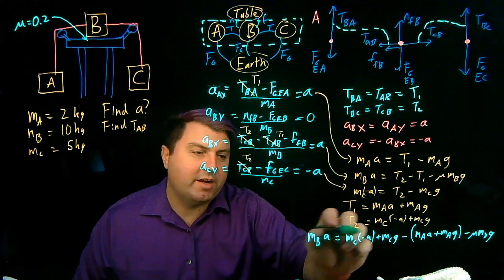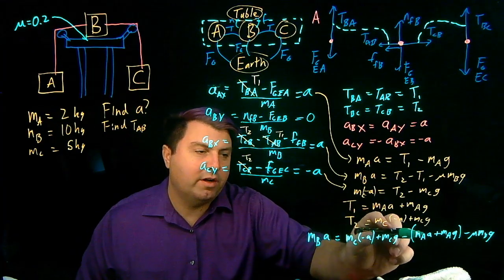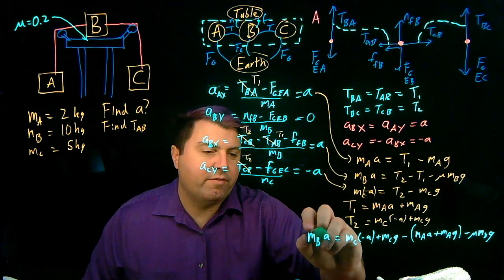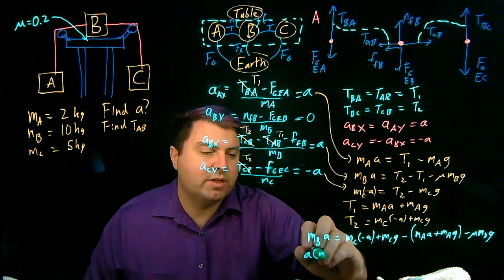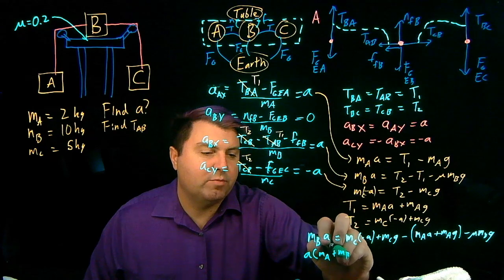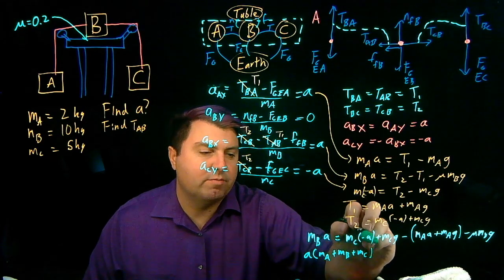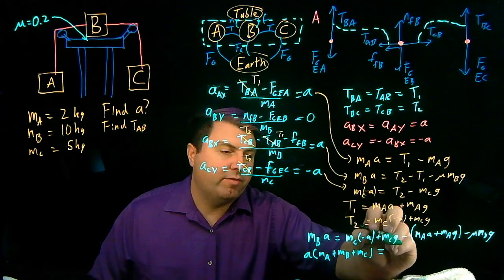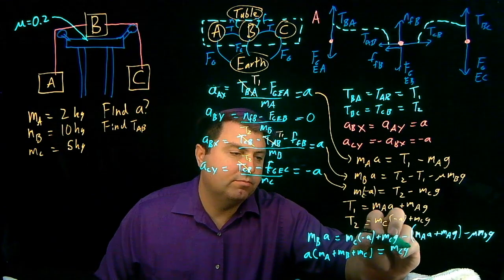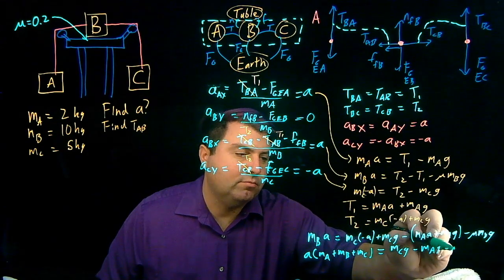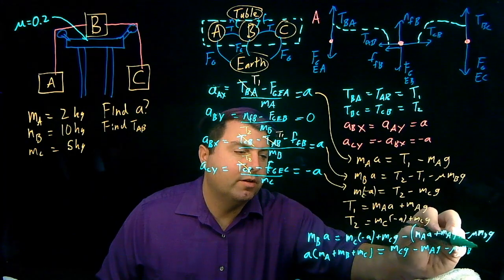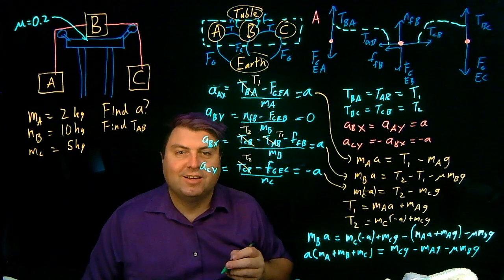So we can see that our A's are here and here, but we can move them all over. And then we have A times MA plus MB plus MC. And then what we have left is we have MCG minus MAG minus mu MBG.